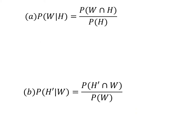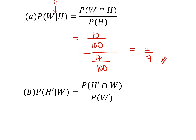For part A, the probability that a professor is overweight given he had high blood pressure uses the formula: P(W intersect H) over P(H). Looking at the table, W intersect H is 10 out of 100, and P(H) is 14 out of 100. So you get 10 over 14, which simplifies to 2 over 7.